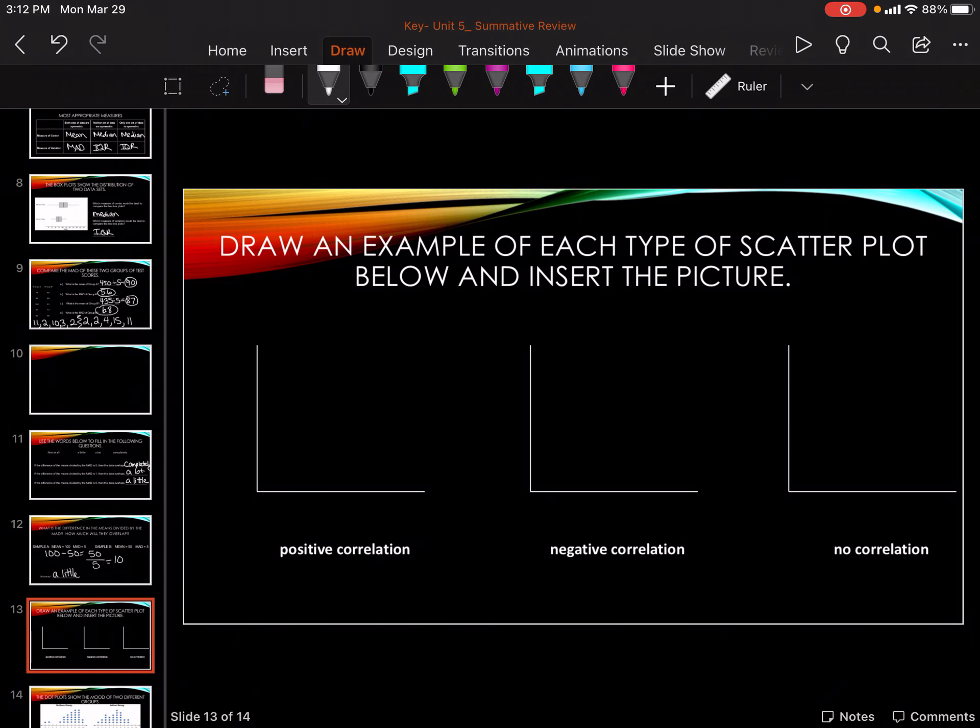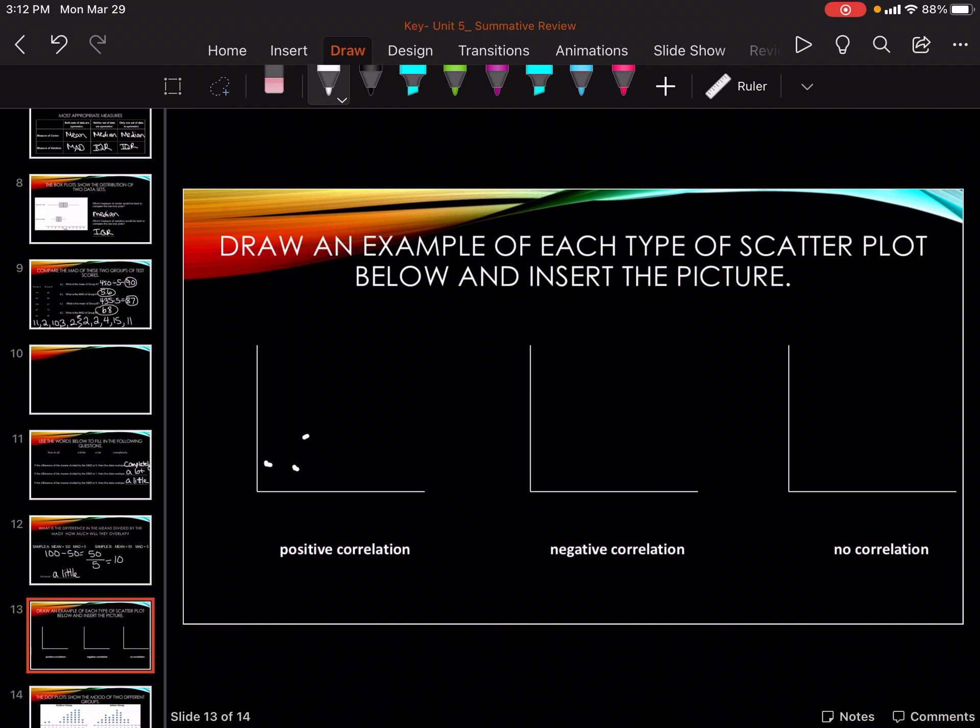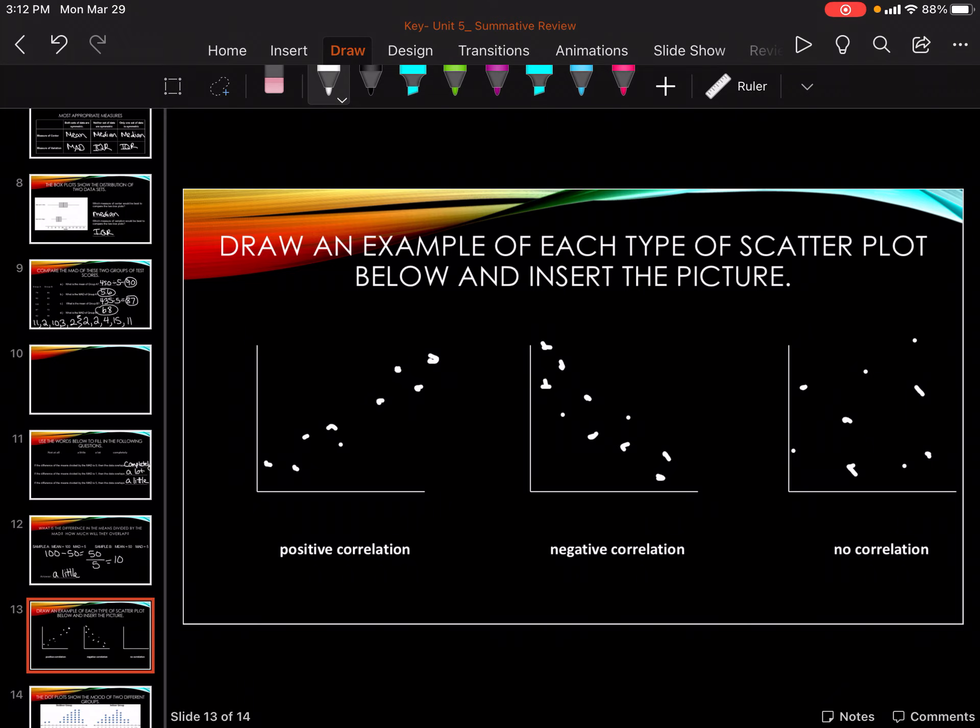Okay, positive correlation on a scatter plot is going to be going up. Negative correlation is going to be going in a general downward, and then no correlation is going to be kind of all over the place.